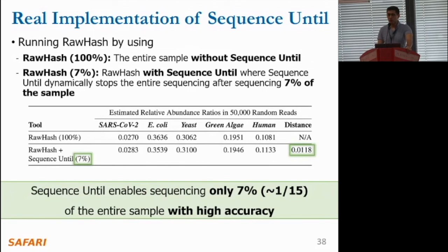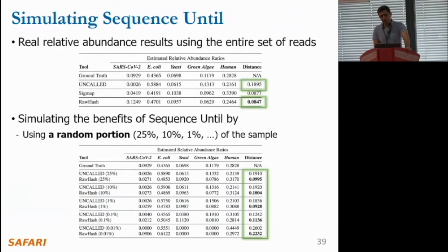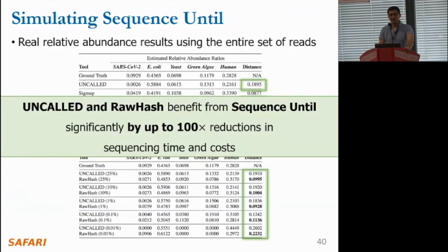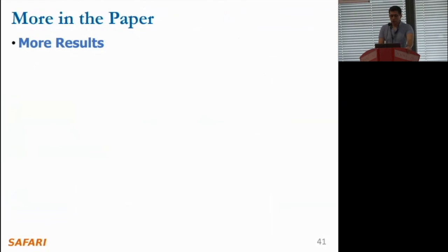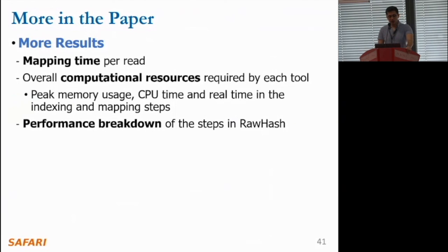We invite you to check our paper for more discussion on the results. Regarding the real implementation of Sequence-Until using RawHash, we show that we can sequence only seven percent of the entire sample while providing highly accurate results similar to using the entire sequencing dataset. We also show the simulated benefits of Sequence-Until not just on RawHash but also on UNCALLED, finding that Sequence-Until can provide significant benefits for UNCALLED too.